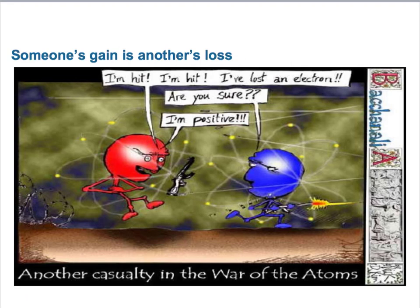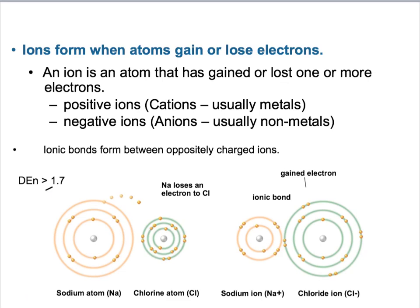Ions form when something gains or loses electrons based on that octet rule. If you lose electrons you become a positive ion or a cation, and most of the time those are metals. If you gain electrons because you have a high electronegativity, you've become negative and you are an anion. You can sort of remember this different ways: cats are good and ants are bad.